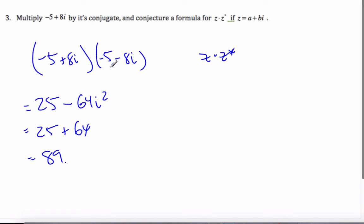and it's minus 64 i squared, which is 25 plus 64, which is 89. And so from that, what happens when I multiply the conjugate by its original? It's a difference of squares scenario. And so it ends up being a squared plus b squared is what this always ends up to. It ends up being a real number only.